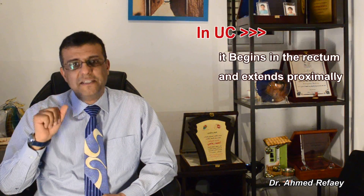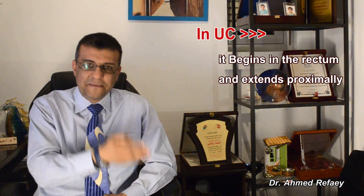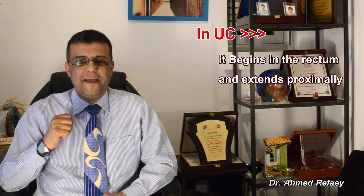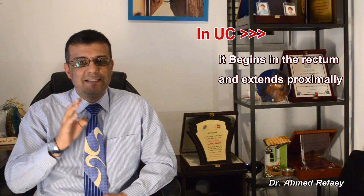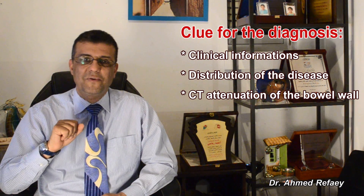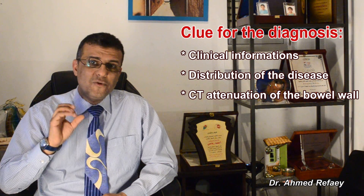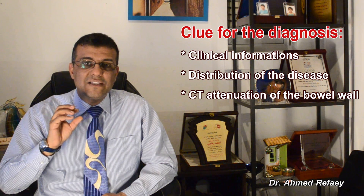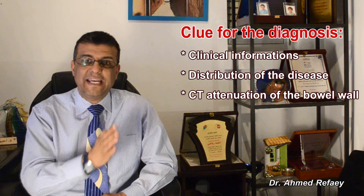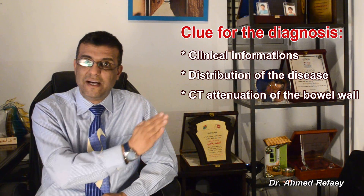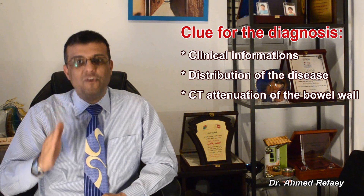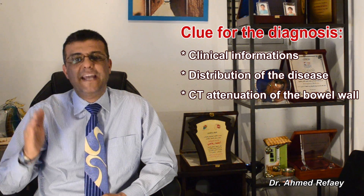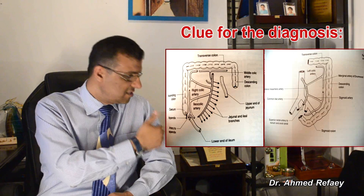In ulcerative colitis, it begins in the rectum and extends proximally. You have to exclude ulcerative colitis from any colitis sparing the rectum. Regarding the distribution of ischemic colitis, the superior mesenteric artery and superior mesenteric vein supply and drain the small bowel and right side of the colon.